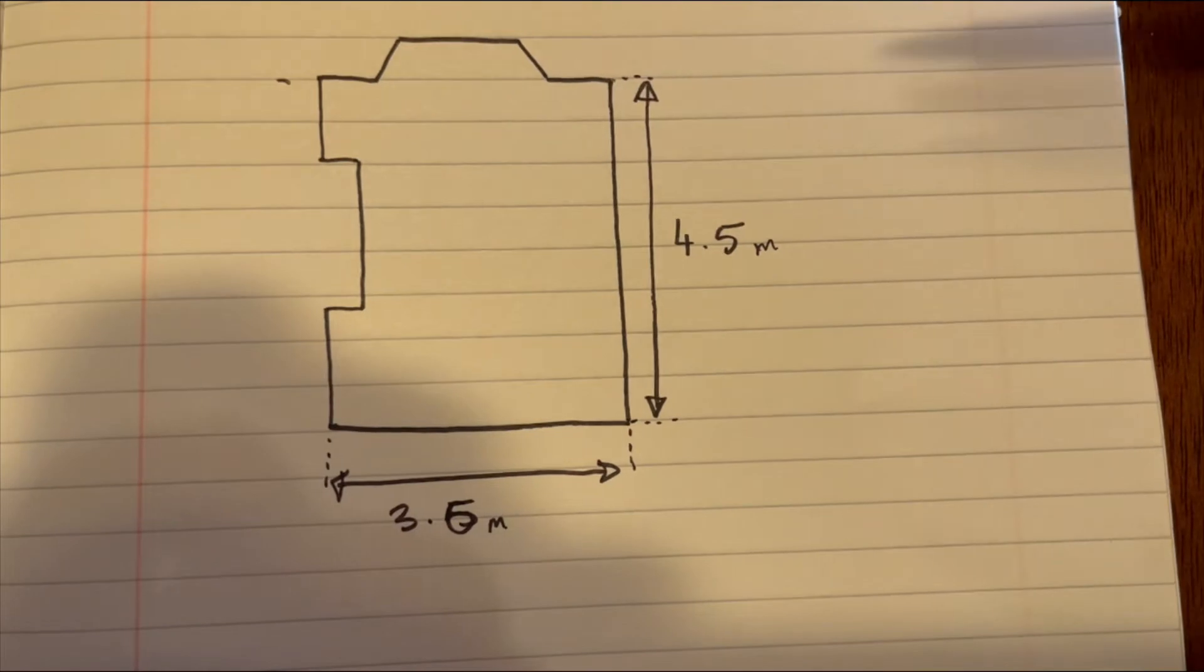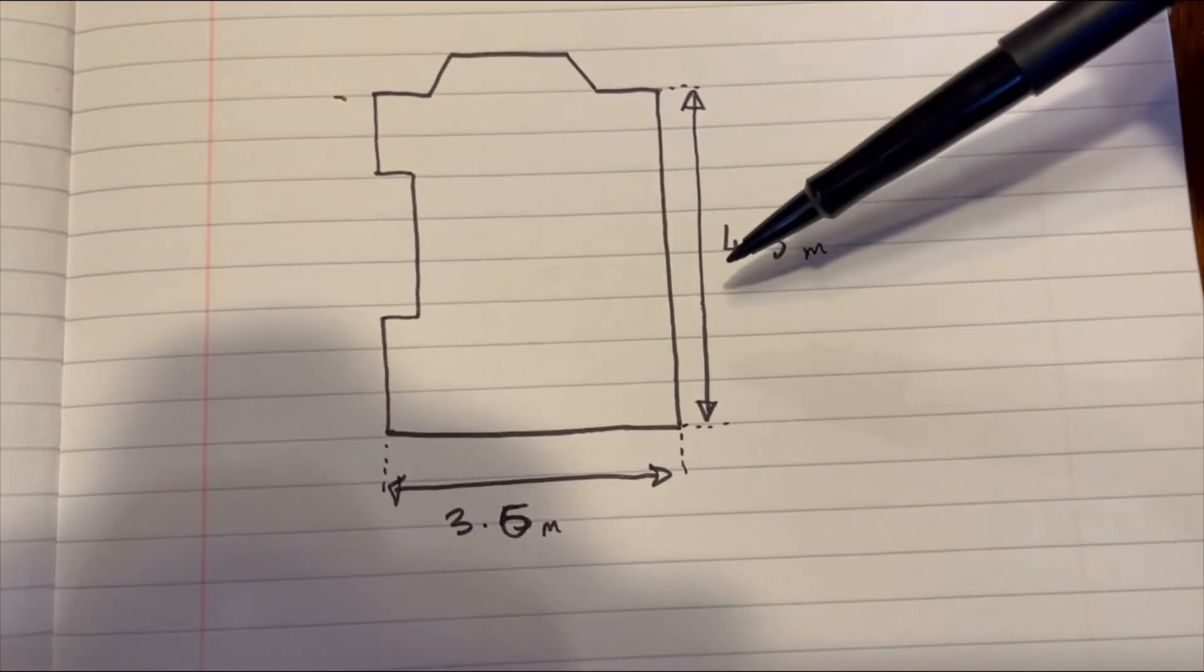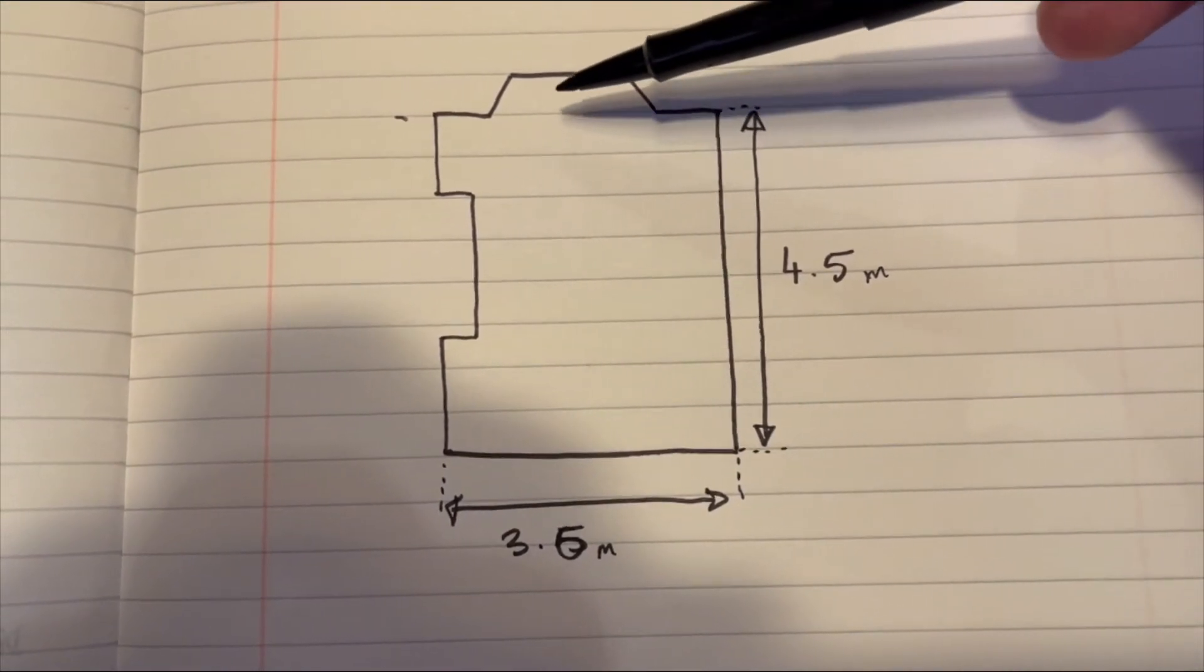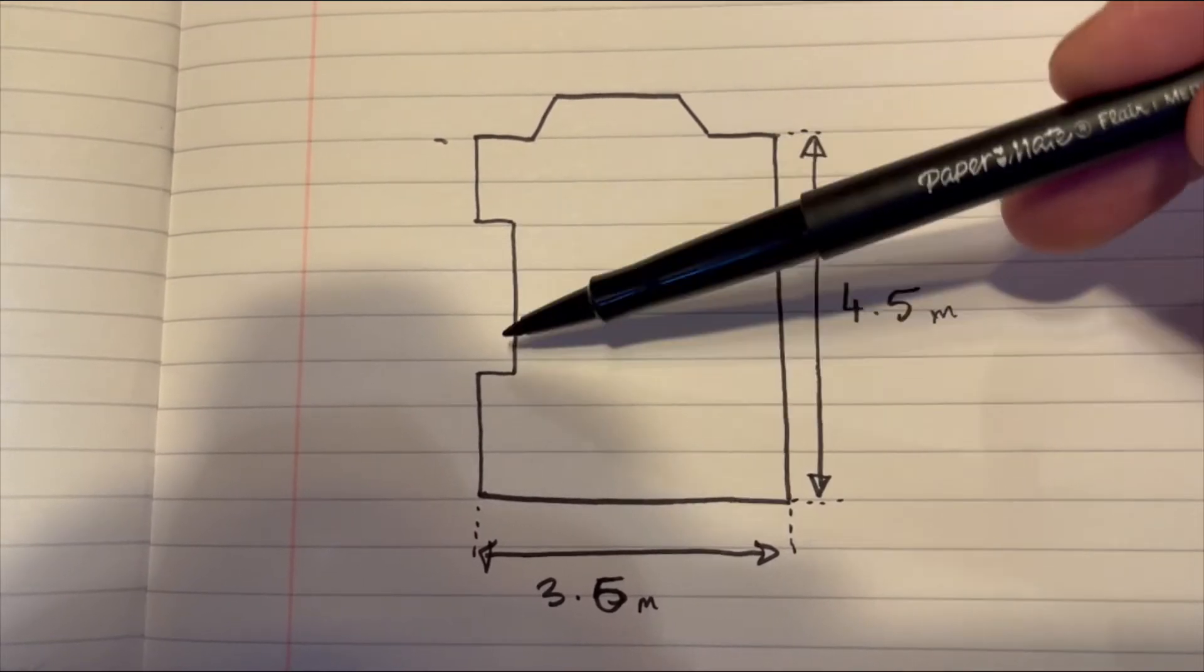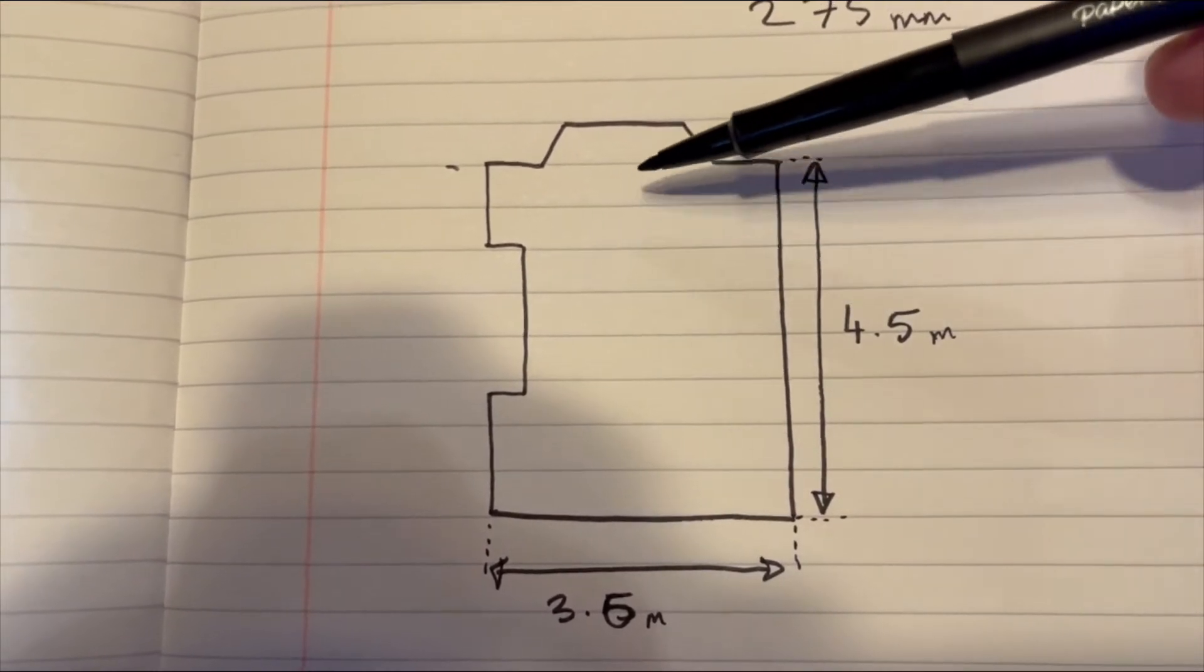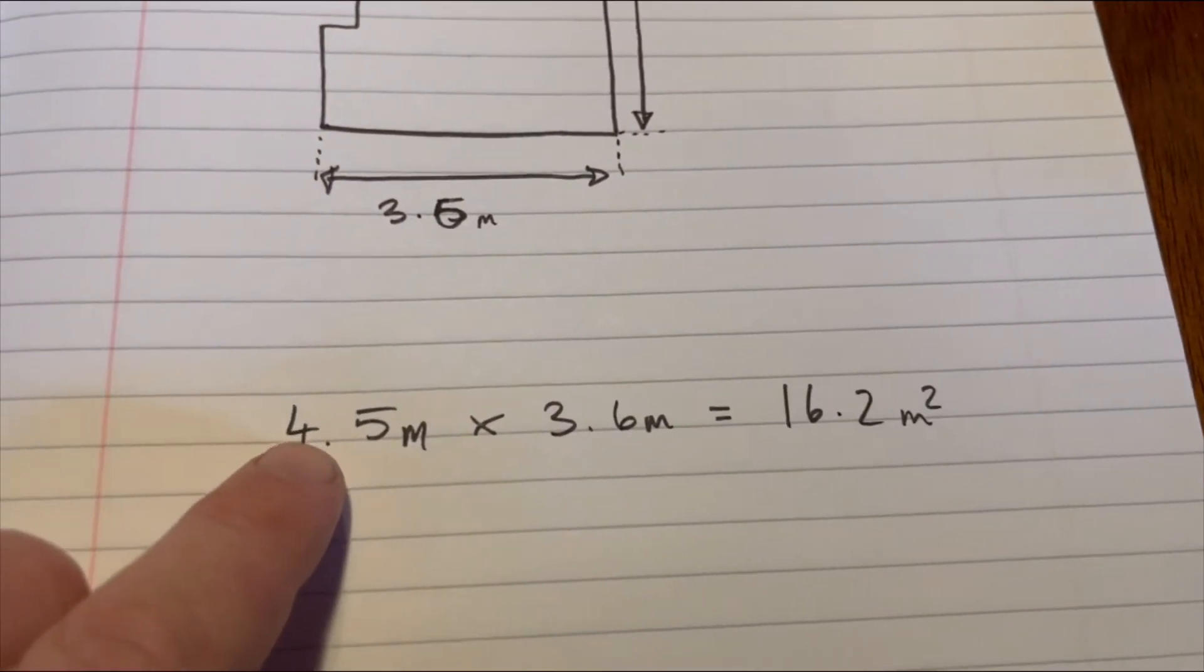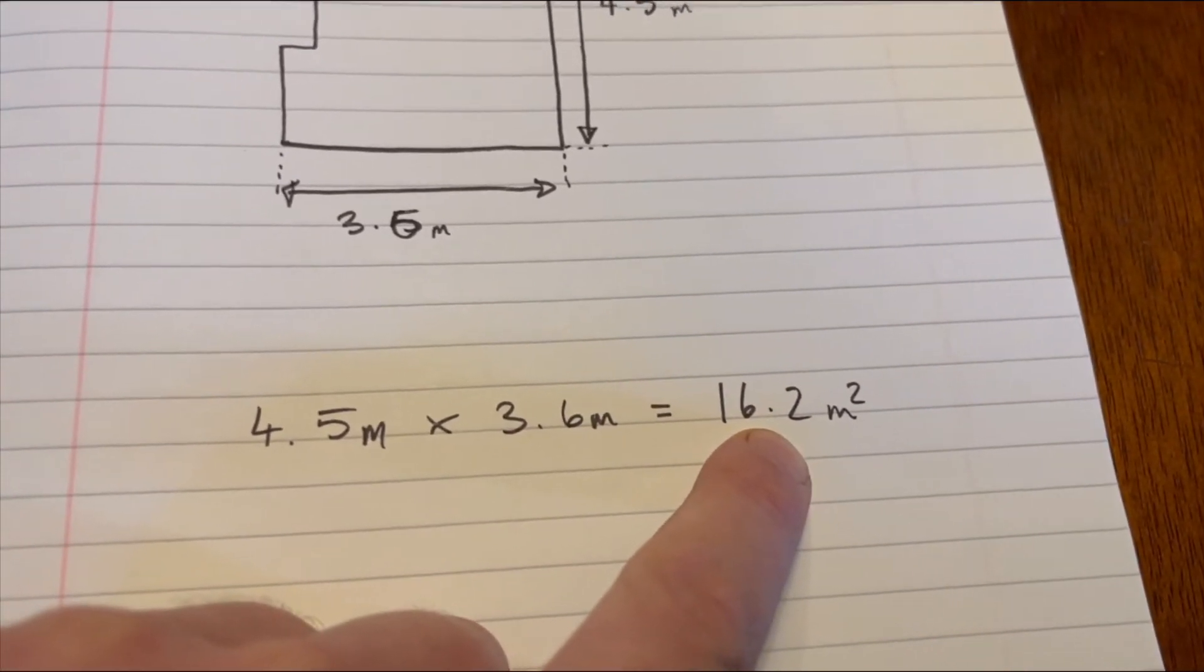So this is a plan view of the room. It's roughly 4.5 meters by 3.6. It's got this bay window area that's about a similar area to where the fireplace comes out and the hearth is here. So between these two, you can cancel one out with the other. So for the calculation of the area, 4.5 times 3.6, we've got 16.2 square meters.